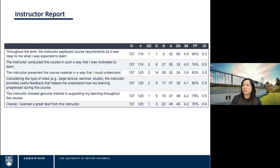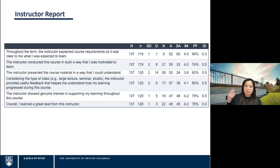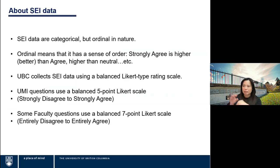In the table, starting from the left: Big N is the number of students invited, small n is the number of students who responded. Then SD for strongly disagree, D for disagree, N for neutral, A for agree, and SA for strongly agree. The last three columns are the metrics we're covering today: the interpolated median (IM), percent favorable (PF), and dispersion index (DI). We also have a table summary for easier reading.